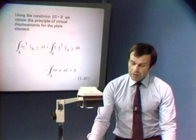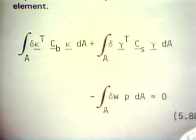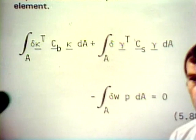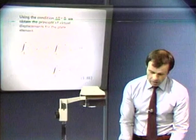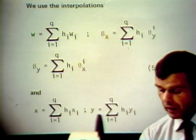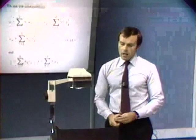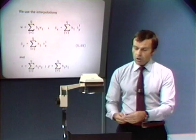From this point onwards, we simply substitute our interpolations. The interpolations we use are for w, beta_x, and beta_y, as well as x and y. The interpolations of beta_x and beta_y are independent from the interpolations of w — that is the important point, as I mentioned in the development of the beam element. Since we have three independent interpolations, at each nodal point we have three unknowns: w and the two section rotations.